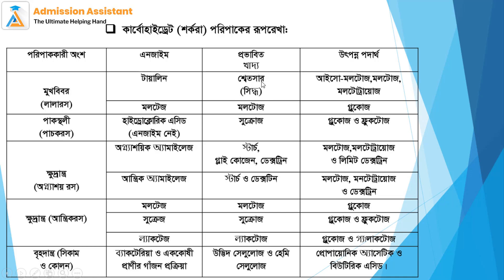Salivary amylase acts on starch and glycogen to produce isomaltose, maltose, and maltotriose. Ptyalin (salivary amylase) performs this action. In the stomach, gastric juice is present, and the products formed are glucose and fructose.